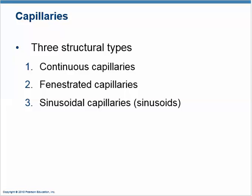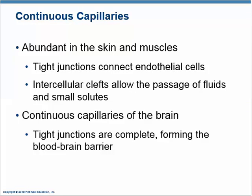When you think of capillaries, continuous capillaries are what come to mind, but there are some other modifications — one is called fenestrated and the other is called sinusoidal. Continuous capillaries are the most common; they're found everywhere, in the dermis of the skin, in the muscles, and in a lot of organ tissues.